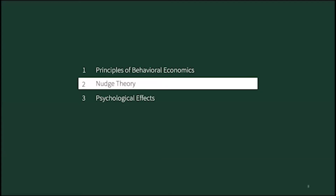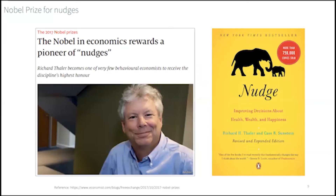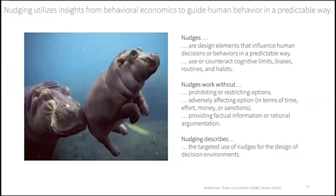Now, let's have a look at how nudges make use of this knowledge. The concept of nudging has been around for some decades, but public awareness was only raised in 2008 when Richard Thaler and Cass Sunstein published their best-selling book, Nudge. Richard Thaler, who received a Nobel Prize in 2017, is viewed as the father of nudges for pioneering research in this field. Nudges are elements that use or counteract heuristics and biases to influence human behavior in a predefined way.